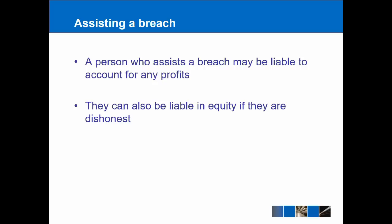We also have the idea of third parties who assist in a breach. If a third party helps to find a buyer for trust property — say a car — and earns a commission of £100, while they haven't received the trust property itself, they've made a profit in relation to the trust. In the first place, they may be liable to account for any profit, so that £100 may be taken as part of a constructive trust and returned to the trust fund. They can also be liable in equity if they are considered to be dishonest, though the meaning of dishonesty has been subject to serious questions in recent years.